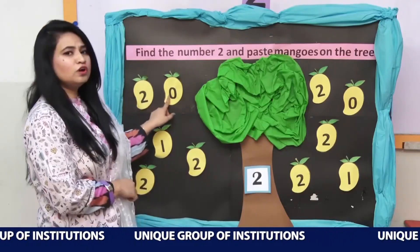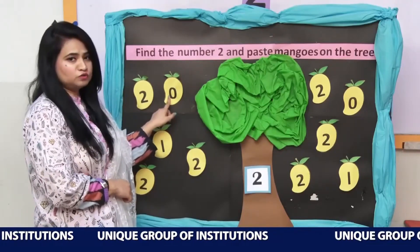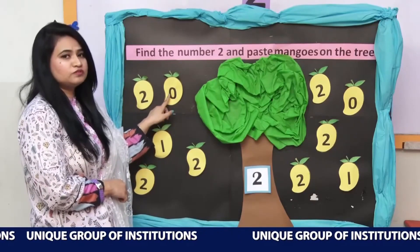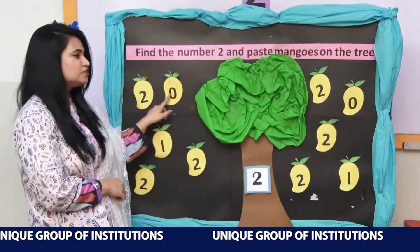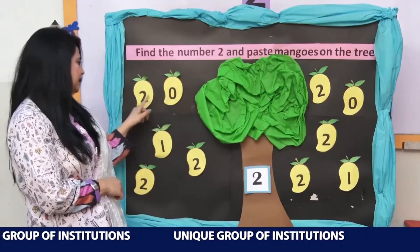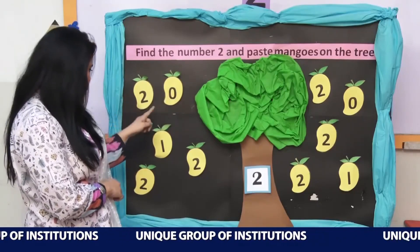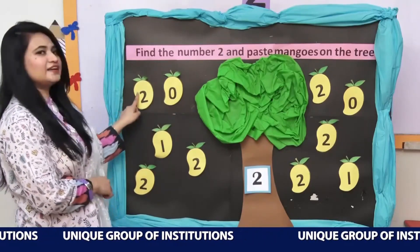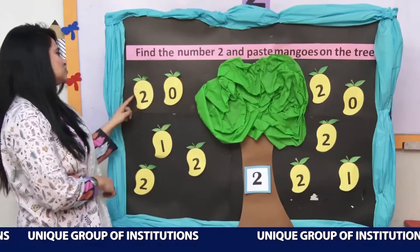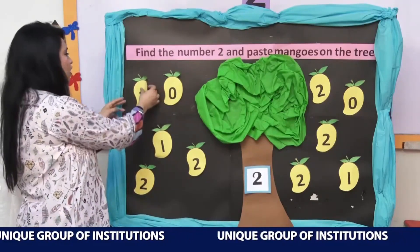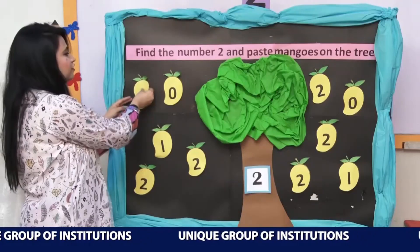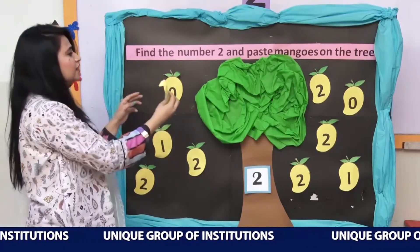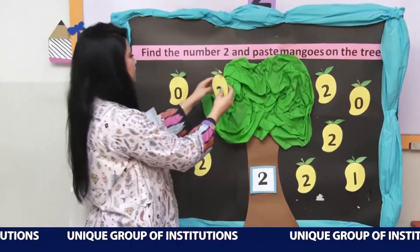Is this 2? No, this is 0. Let's find the 2. Where is 2? Yes, this is 2. Now we will paste this mango on the tree.